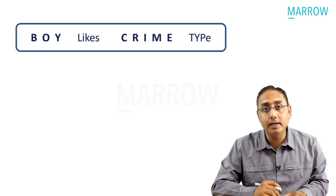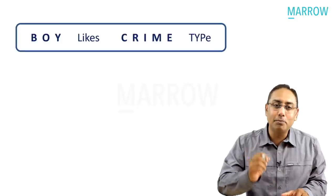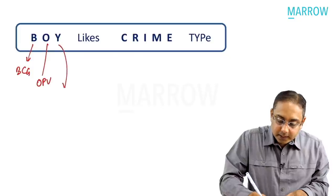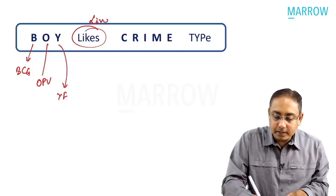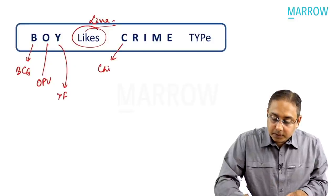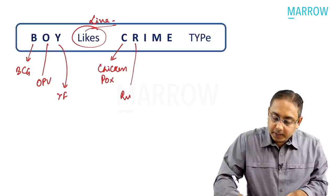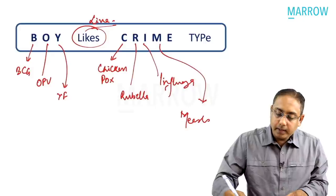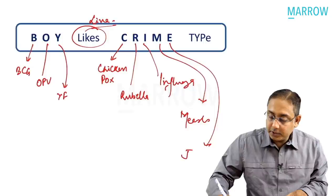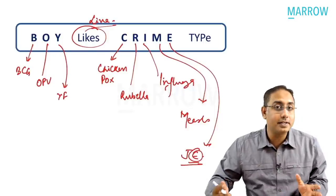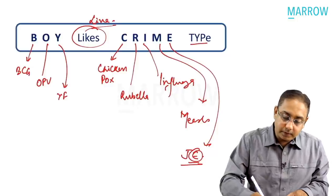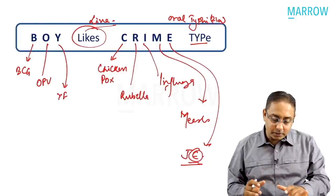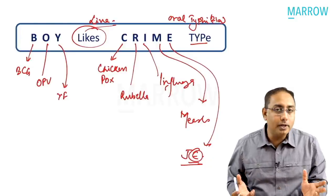Remember all live vaccines with the mnemonic 'Boyle Likes Crime Types': B = BCG, O = Oral polio vaccine, Y = Yellow fever vaccine. 'Likes' means live virus vaccines. C = Chickenpox, R = Rubella, I = Influenza, M = Measles, E = Encephalitis (Japanese encephalitis), TYP = oral Typhi 21A. So 'Boyle Likes Crime Types' helps you remember all live vaccines for your MCQ exam.